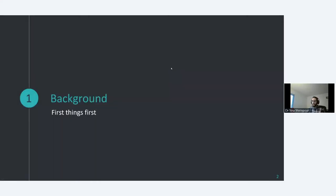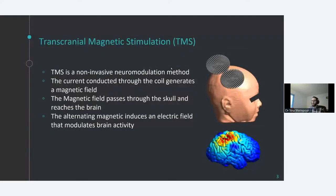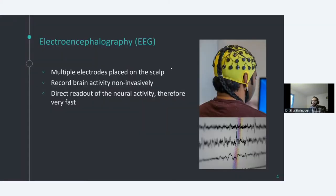Let's go over some quick background in case you're not familiar. TMS, or transcranial magnetic stimulation, is a non-invasive neuromodulation technique where you use a magnetic coil to stimulate the brain and modulate brain activity. TMS is used a lot in research and clinical applications. EEG, or electroencephalography, is a non-invasive brain recording technique where you use electrodes on the scalp to record brain activity. The nice thing about EEG is that it's a direct readout from the electrical activity of the brain, so it's basically instantaneous.